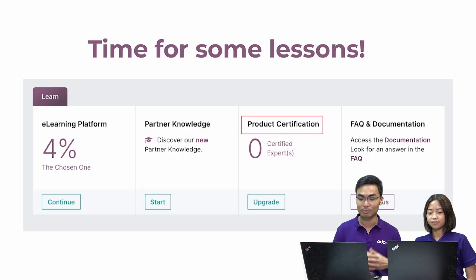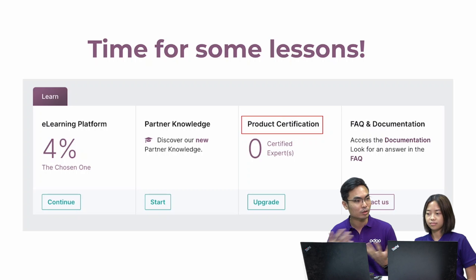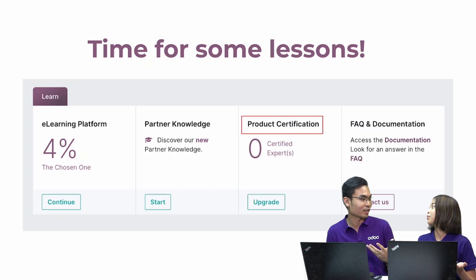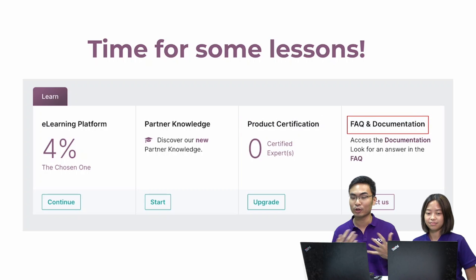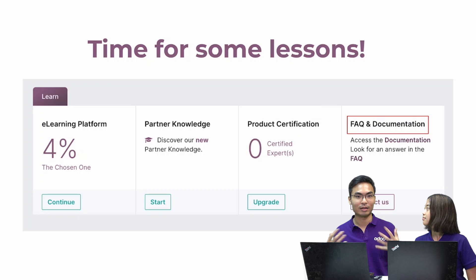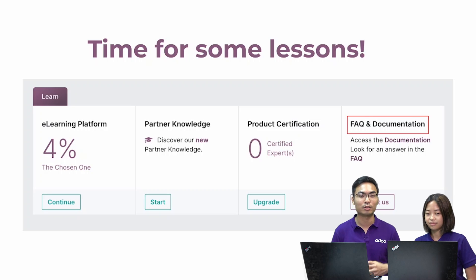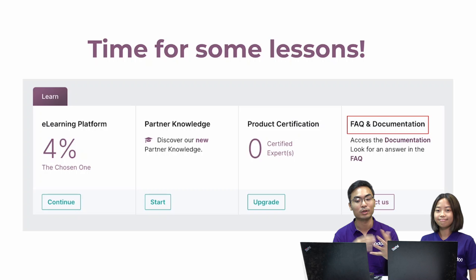We understand that some customers have special requirements, and sometimes it's not just an out-of-the-box solution. That's why we provide source code to our partners for development. We break it into four parts: first, a trial extension where you can extend trial databases for testing and customization. Second is Odoo SH — a hosting platform made by Odoo in cooperation with GitHub, providing a platform for partners to do customization easily. Third, we share our source code via GitHub access. Fourth, you can download it on Odoo Enterprise as well.